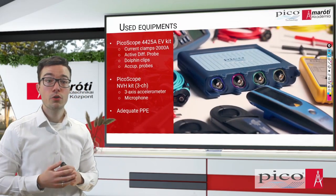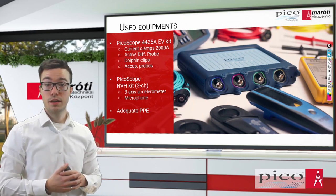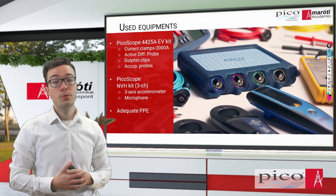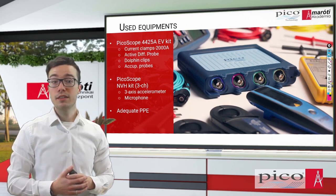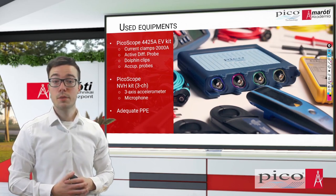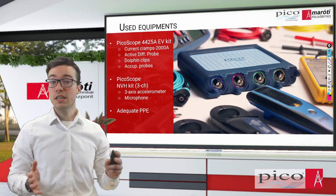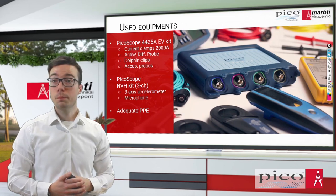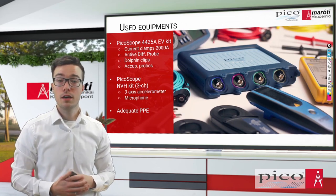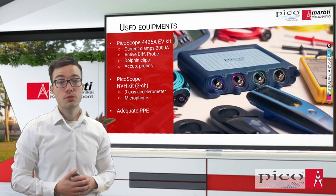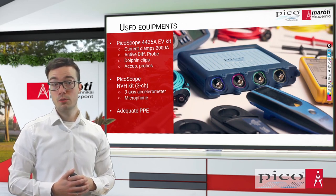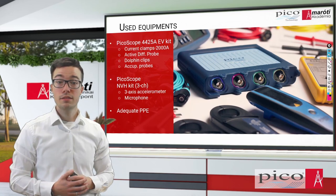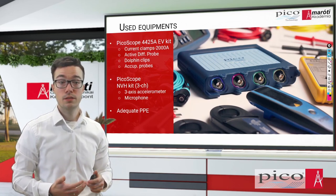So, in this slide, we are going to have a discussion about what equipment we were using for the following tests. First things first, we used the new Picoscope 4425A and the new EV kit, which contains lots of very interesting measuring devices and probes. We were using all the three current clamps. Of course, the 2000A current clamps I'm talking about. We were using active differential probe as well. Also, the dolphin clips and the measuring needles or needle probes. And also, we were using Picoscope's NVH kit, the three-channel version. And we used the three-axis accelerometer and the microphone device as well. And I can't emphasize enough that you must have adequate PPE for the measurements.